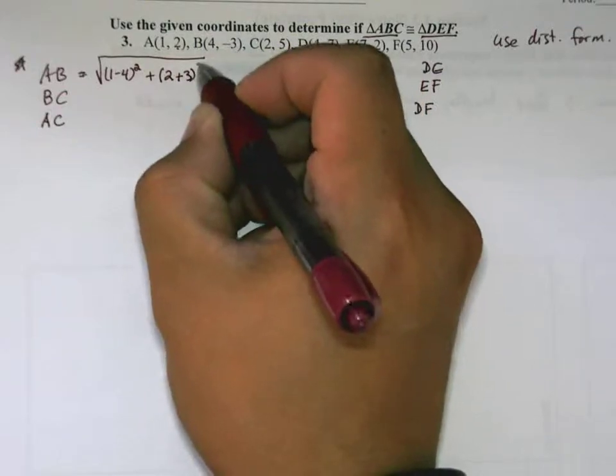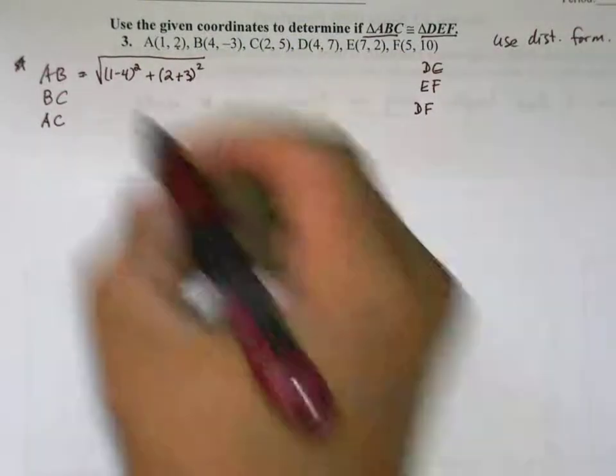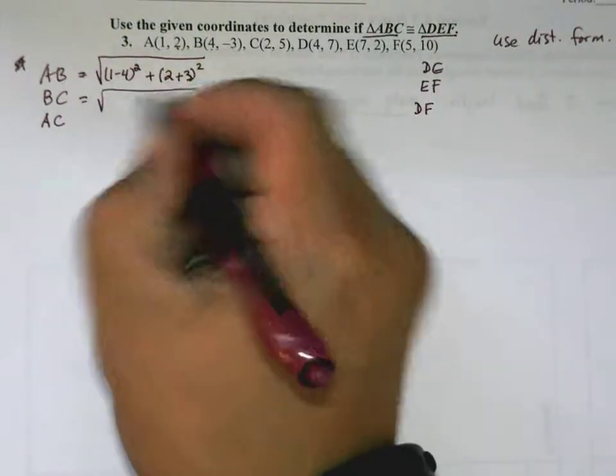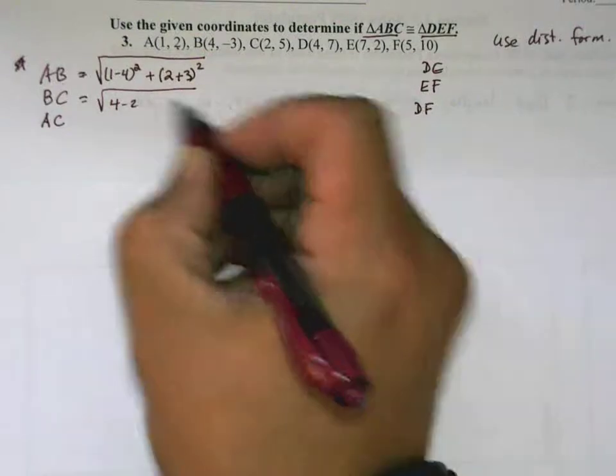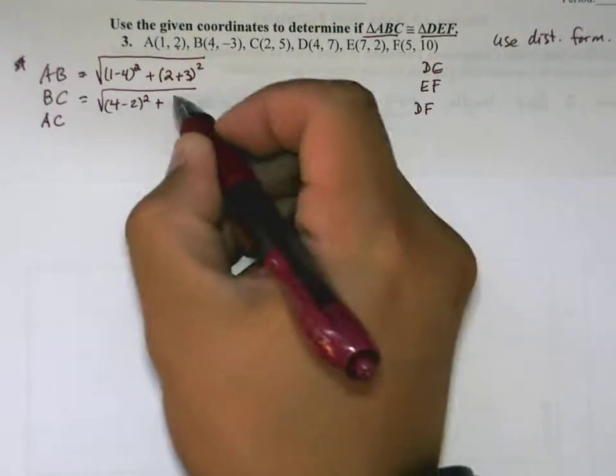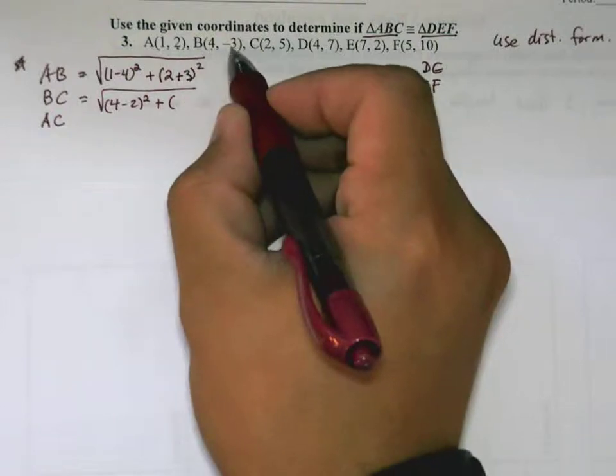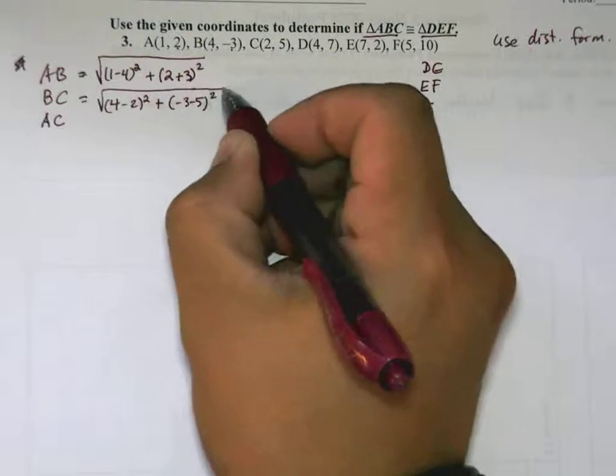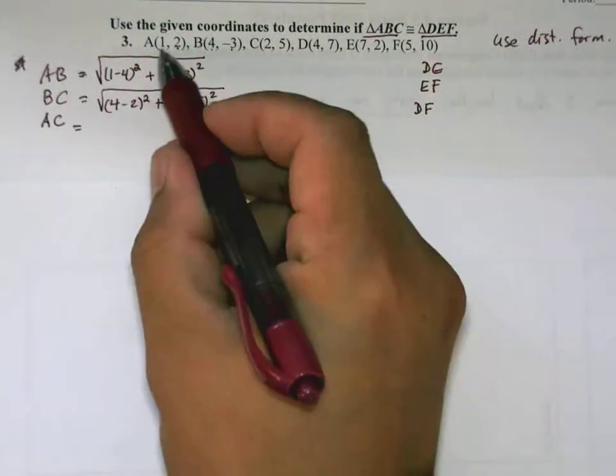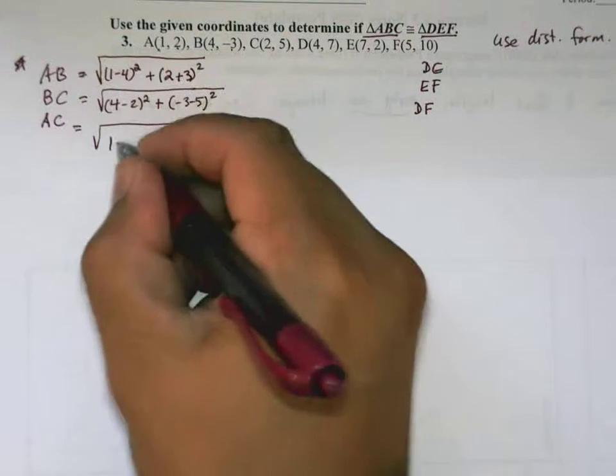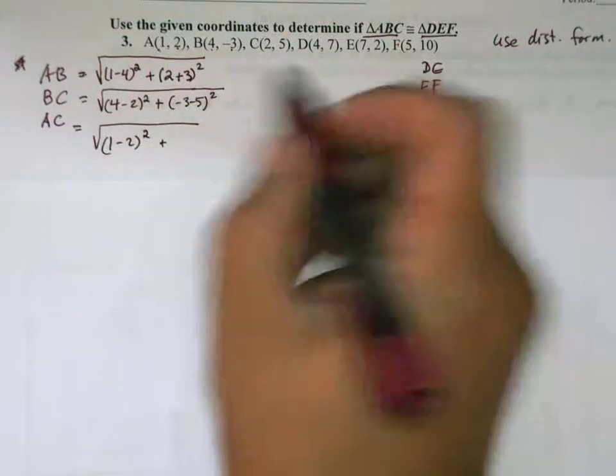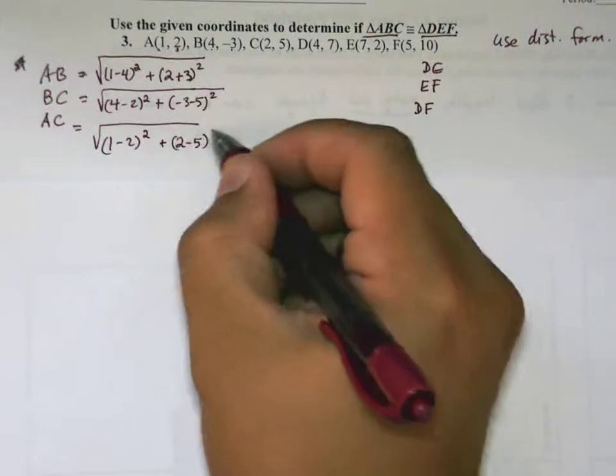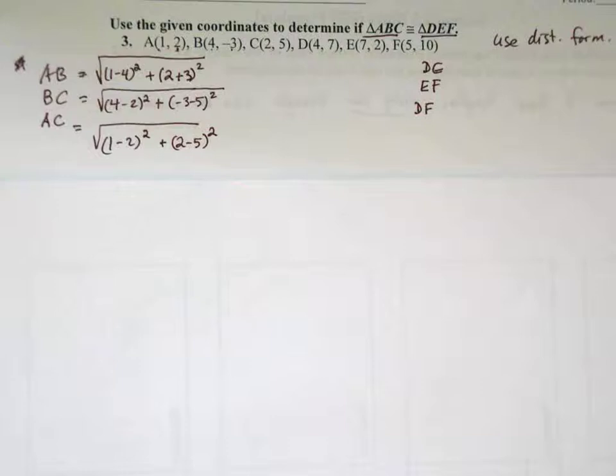For BC it's √[(4-(-3))² + ((-3)-5)²]. And then AC is √[(1-2)² + (2-5)²]. Now I'm going to go ahead and evaluate all of those.